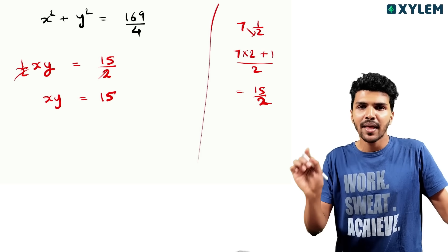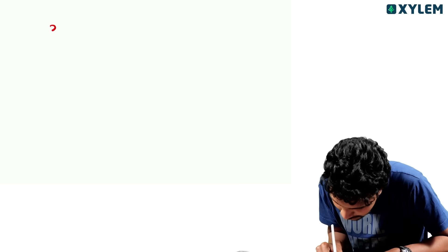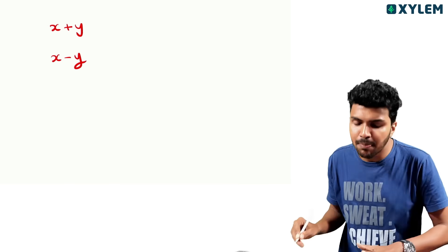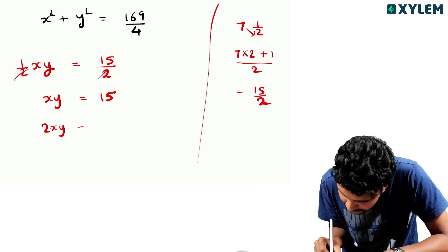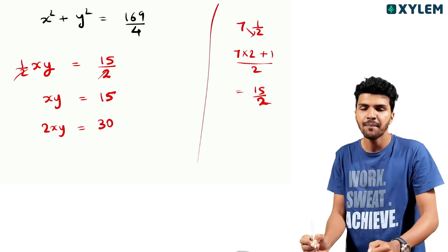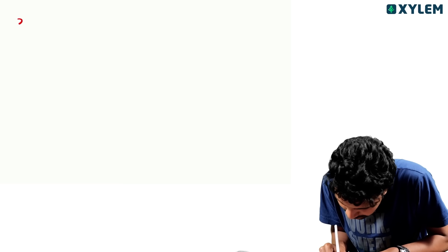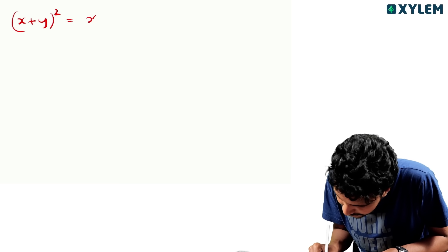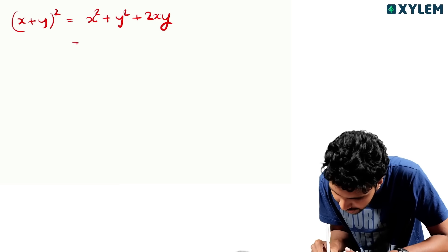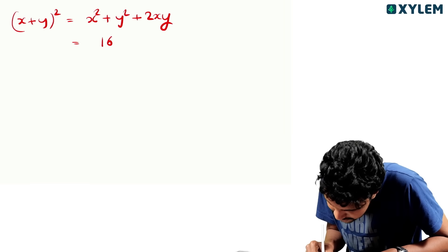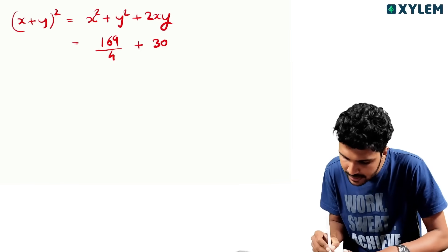Now, x plus y whole square is equal to x square plus y square plus 2xy. So x plus y whole square is equal to 169 by 4 plus 2xy, which is 30.